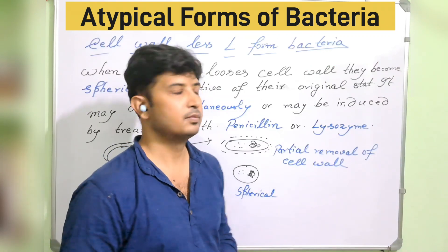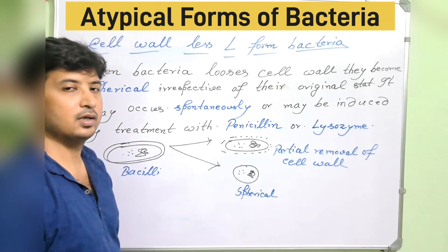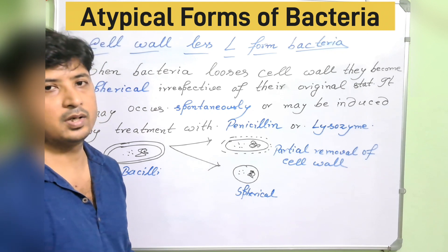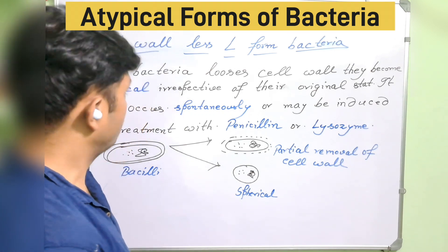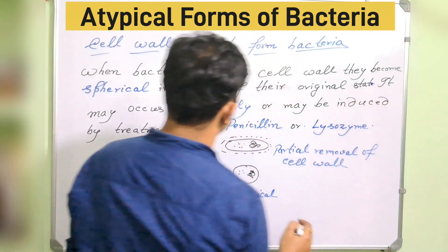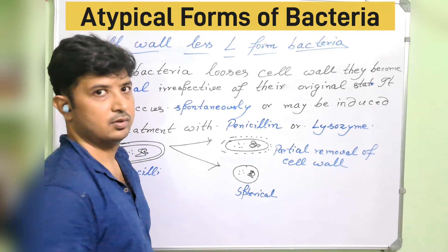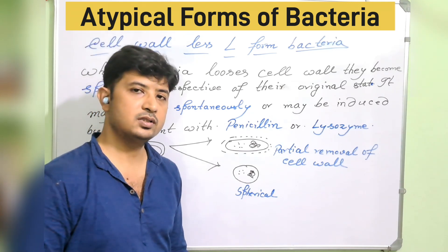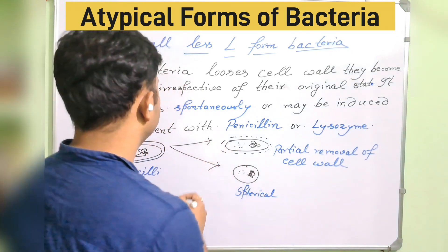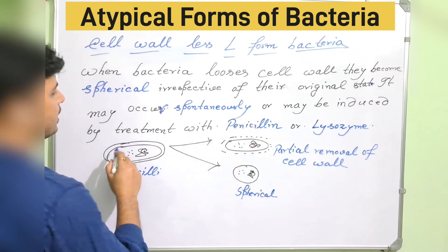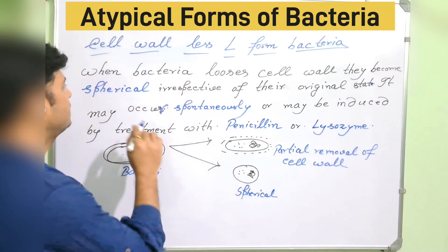Let's define L-form bacteria. We know a bacterium contains a cell wall, cell membrane, and within the cell membrane there is cytoplasm, nucleoid, ribosomes, and other proteins and carbohydrates. When a bacterium loses its cell wall, it becomes spherical — irrespective of its original state, whether it is a coccus, bacillus, or any other form. The first criterion to be an L-form bacterium is that it must become a spherical form after losing its cell wall.